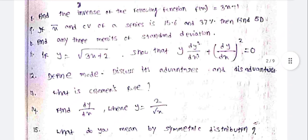Find any 3 merits of standard deviation. If y equal to square root of 3x plus 2, show that y times d²y/dx² plus (dy/dx) squared equal to 0.